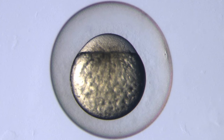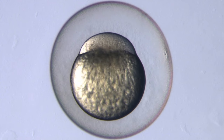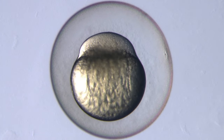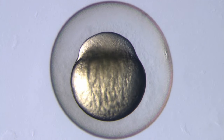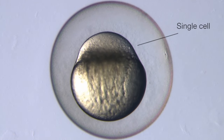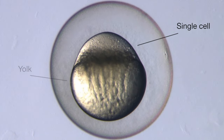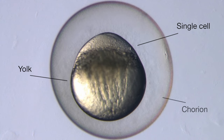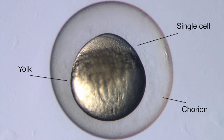A fertilized zebrafish egg has three main components: the single cell, the yolk, and the protective membrane called the chorion.